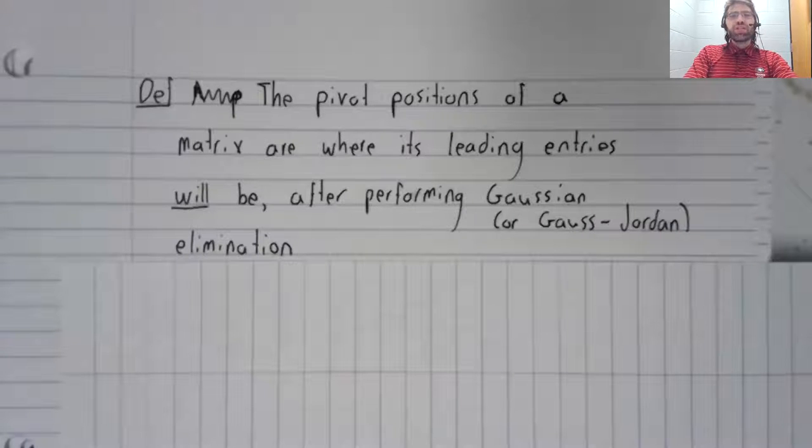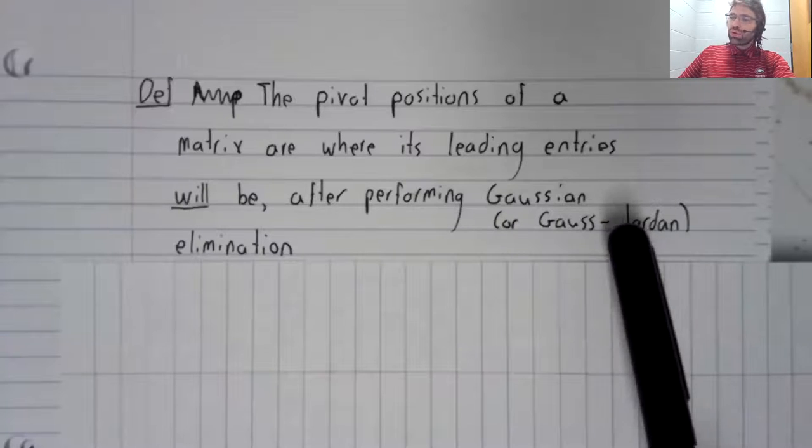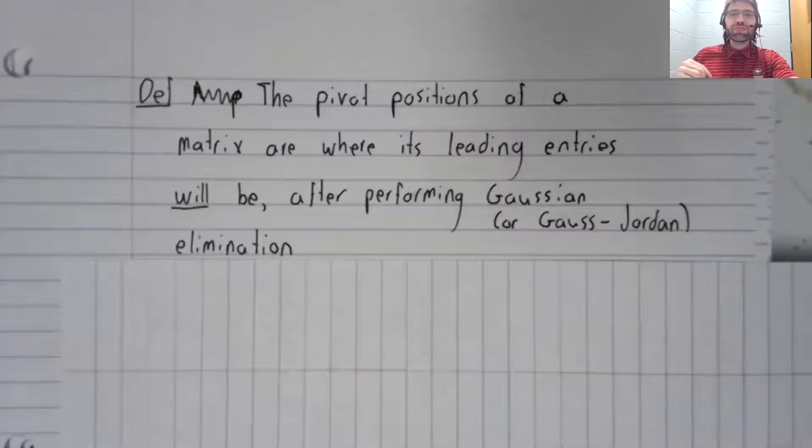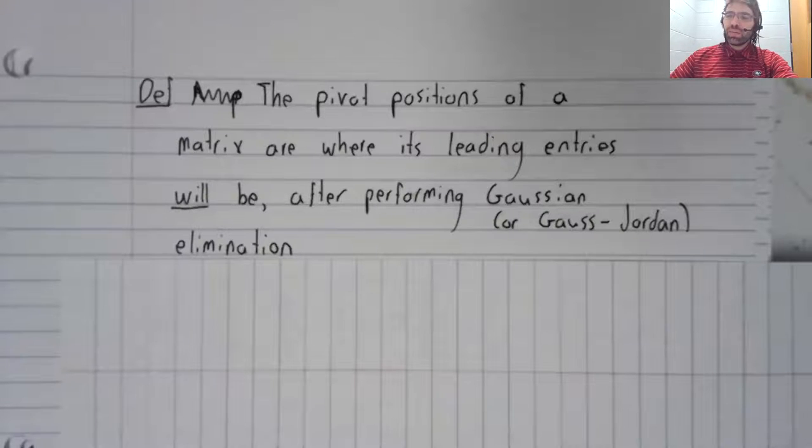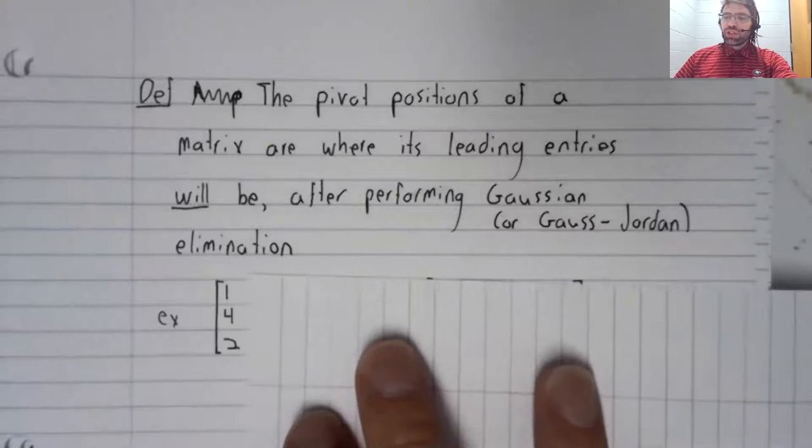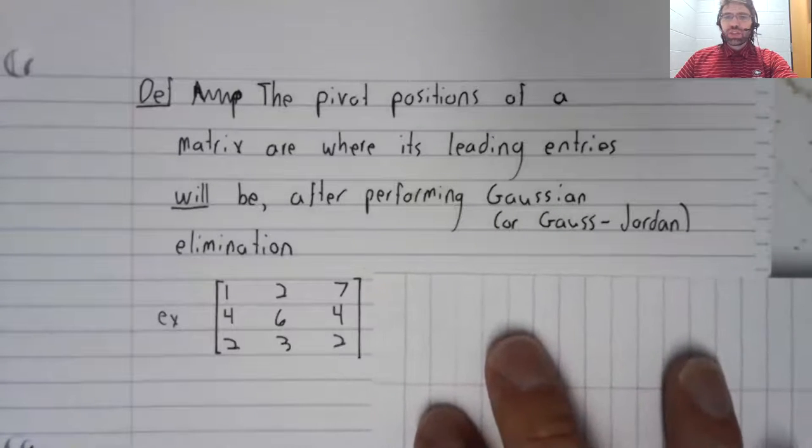The pivot positions of a matrix are where its leading entries will be after performing Gaussian elimination. Or you could perform Gauss-Jordan elimination as well. Either way, you'll get the same thing. As an illustration of this definition,